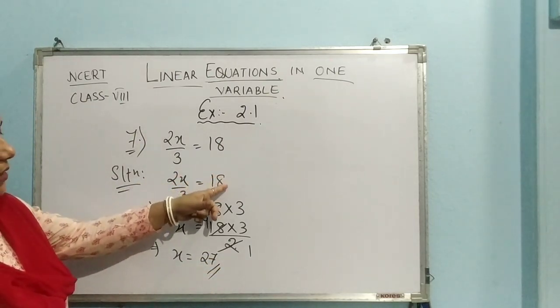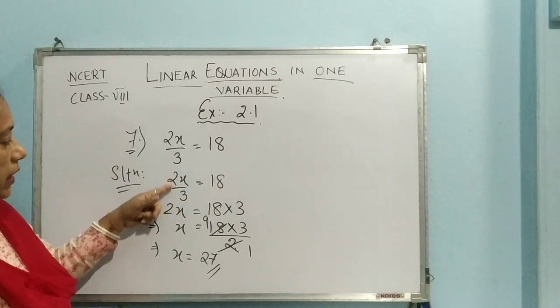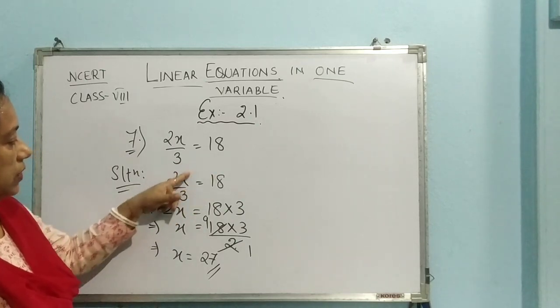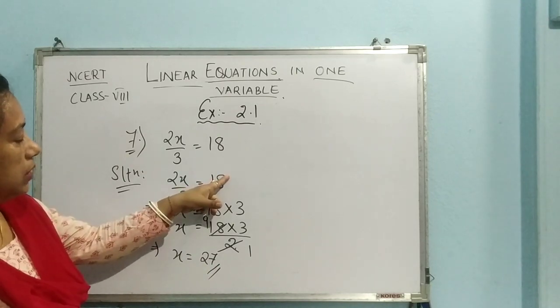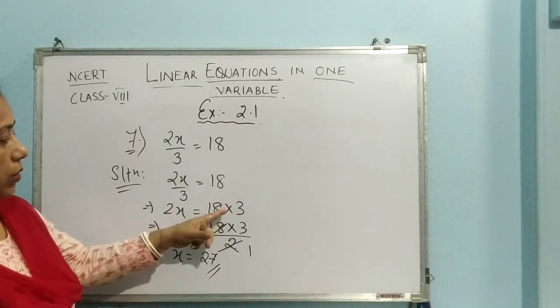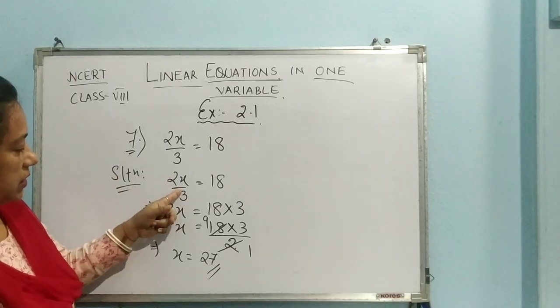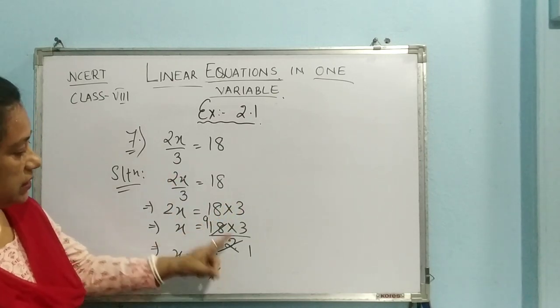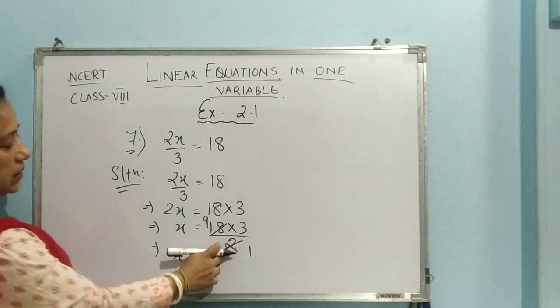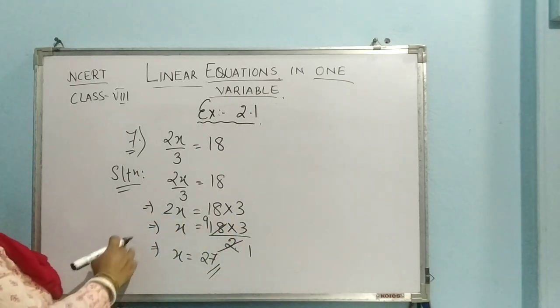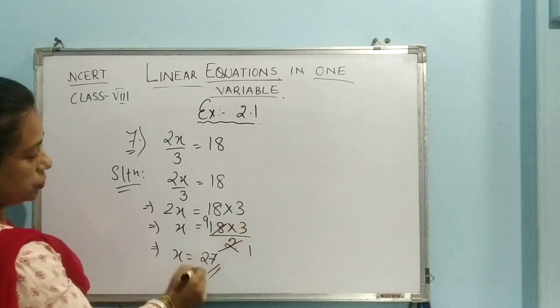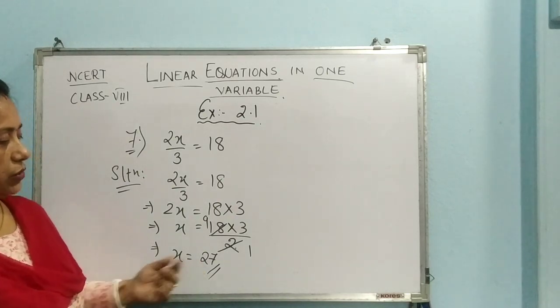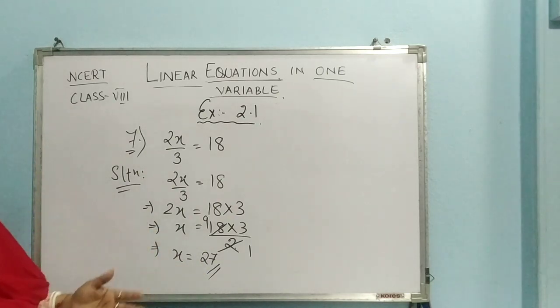2x by 3 equal to 18. We can consider it to be cross multiplication method is also there. Means, what we will be having, whatever a variable we are having, we can just, in order to get the value of this, we can cross multiply. Means, 3 will be going to the upper portion and 2 will be coming downward. And otherwise, we can say that here it is divided. So if it changes side, it becomes multiplication. Here, it is multiplication. It is changing side. It is coming to division side. Means, it has become the numerator and 2 has become the denominator on the other side. Now, 18 into 3 by 2. 2 nines are 18 and 9 threes are 27. It gives you the value of x to be 27. You can pause the video and write it down.